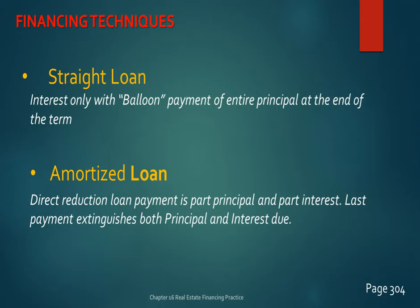Amortized loans are typically what we do today — the best way to finance almost any kind of real property. With amortized loans, you make one level payment every month: a portion goes to interest and a portion to principal. In the early term, most of the payment goes to interest with little principal reduction, but if you make payments for the full term, you'll extinguish the debt.